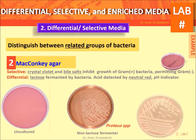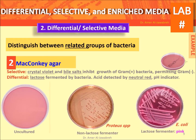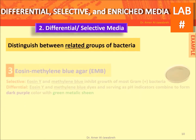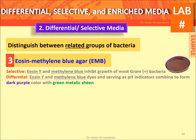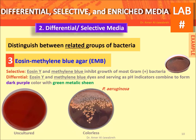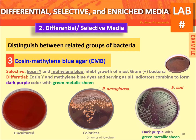MacConkey agar is differential by lactose and neutral red pH indicator. Eosin methylene blue (EMB) agar: selective by eosin Y and methylene blue dyes, and differential by eosin Y and methylene blue as pH indicators.